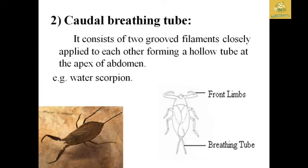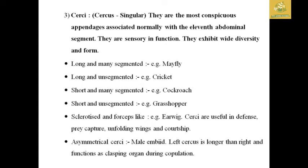The caudal breathing tube, seen in water scorpions, consists of two grooved filaments closely applied to form a hollow tube at the apex of the abdomen used for breathing. The cerci are appendages associated normally with the eleventh abdominal segment and are mainly used for sensory functions. Cerci can be classified as long and multisegmented, long and unsegmented, short and multisegmented (as in cockroaches), or short and unsegmented (as in grasshoppers). Cerci can also be spatulate and forcep-like, as in earwigs, used for defense and capturing prey.